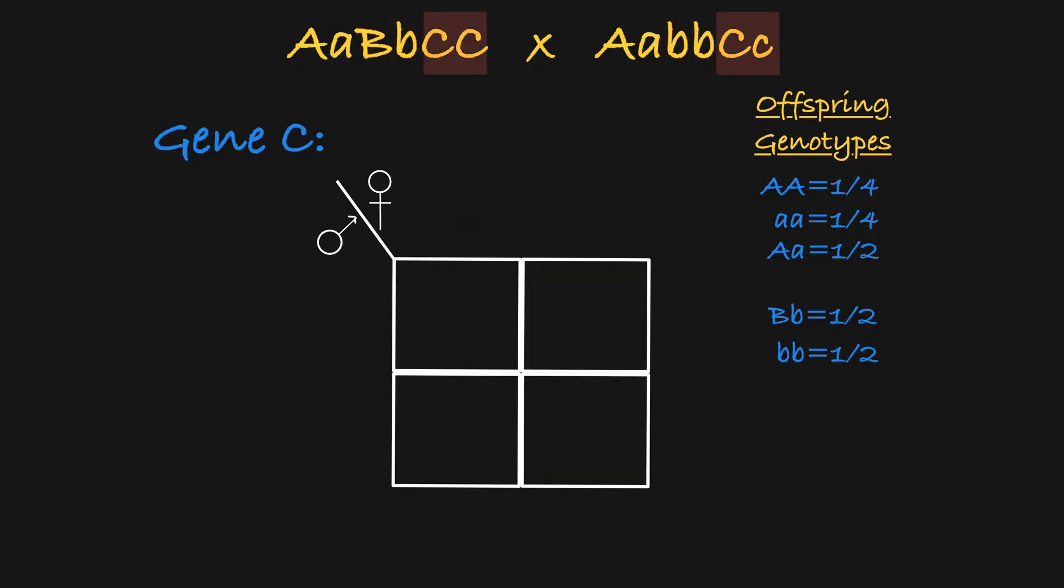And now for gene C. When we set up this Punnett square, we see that one half of the offspring will be homozygous dominant and one half will be heterozygous.